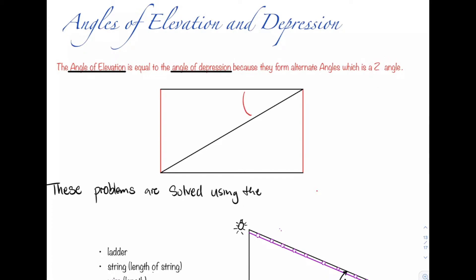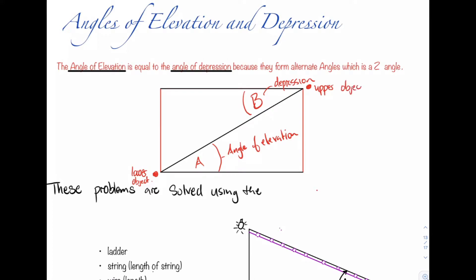Here, let's put in B, which represents the angle of depression, and let's put in A, which is the angle of elevation. The difference between elevation and depression is simply perspective. One person or object is on the ground looking up at an elevated angle, while another object is up on top of a vertical object looking down on the lower object. The angle formed here is the angle of depression, and the angle formed here is the angle of elevation.